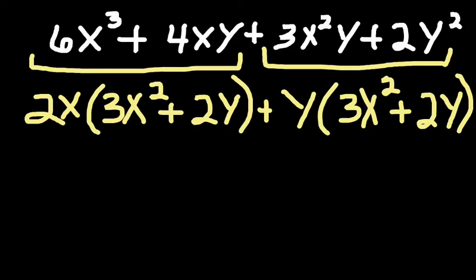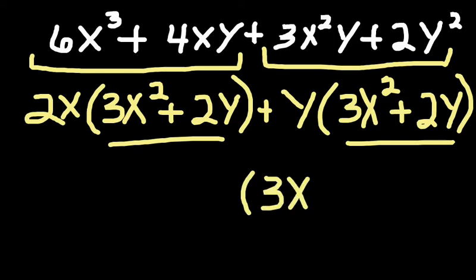And you'll notice that now I factored them out, now I have a common factor of 3x² plus 2y. And that will give me one of my factors, 3x² plus 2y.